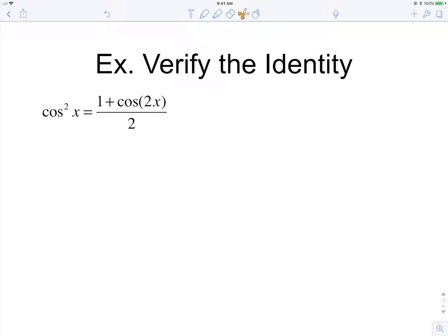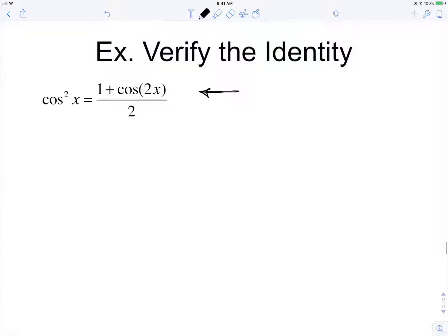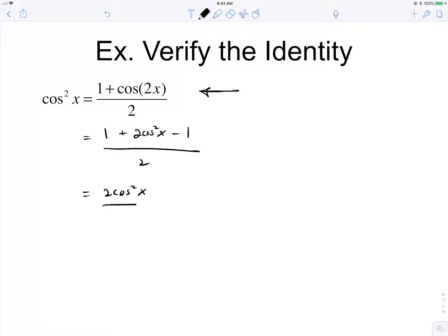This is actually power reducing identity that you guys already have to memorize, so I didn't go over this in class. But you could prove it. You could always just use a double angle identity for cosine. You could use the one that's 2 cosine squared minus 1 all over 2. So the 1s cancel, you have 2 cosine squared over 2. The 2s cancel, so then that's just cosine.